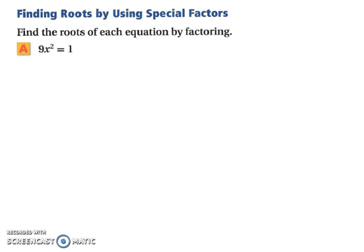So, let's start. So, we have finding roots by using special factors. So, we have 9x squared equals 1. So, we're going to set this so that that way, our 1 is on the same side of the equation as our 9x squared. And since we can rewrite it in standard form, I already did that. And then, let's write the left side as a squared minus b squared. So, we have 3x squared minus 1 squared.